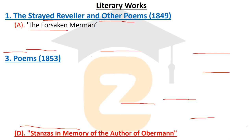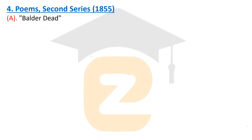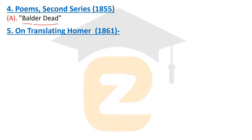Another poem included in the 1853 Poems volume is 'Stanzas in Memory of the Author of Obermann.' Next, Poems: Second Series was published in 1855. An important poem included in this second series is 'Balder Dead.'